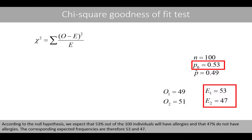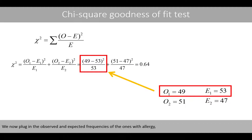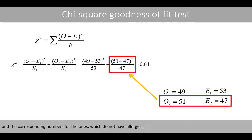According to the null hypothesis, we expect that 53% of the 100 individuals would have allergies, and that 47% do not have allergies. The corresponding expected frequencies are therefore 53 and 47. We now plug in the observed and expected frequencies of the ones with allergy and the corresponding numbers for the ones which do not have allergies.